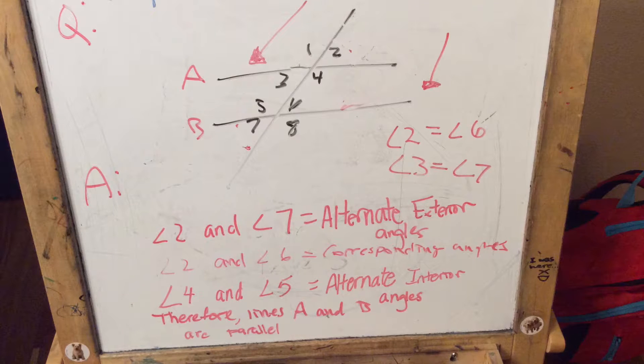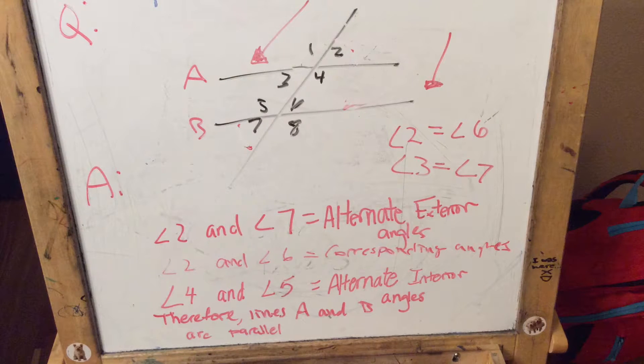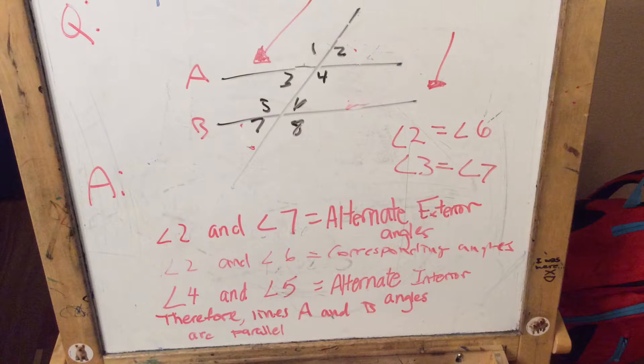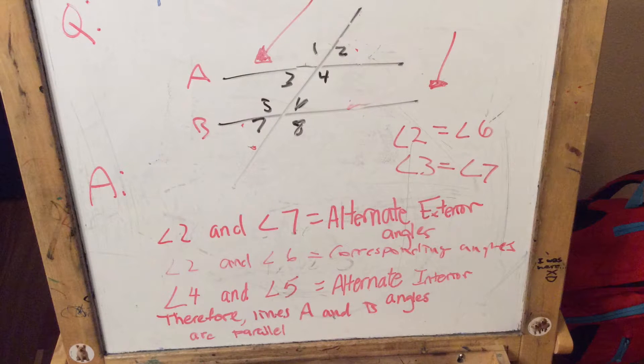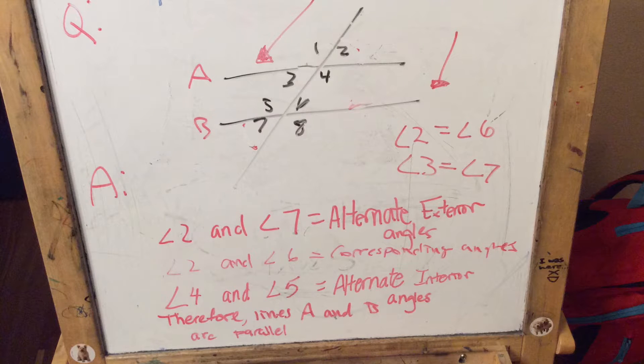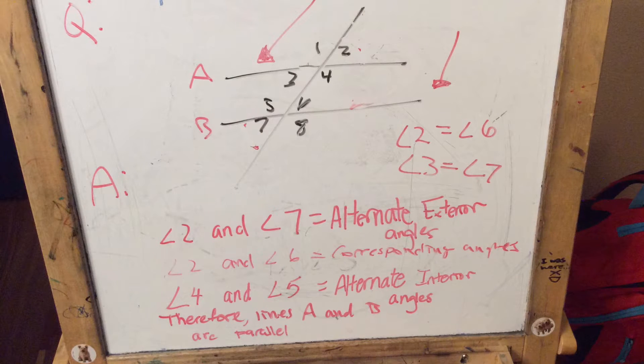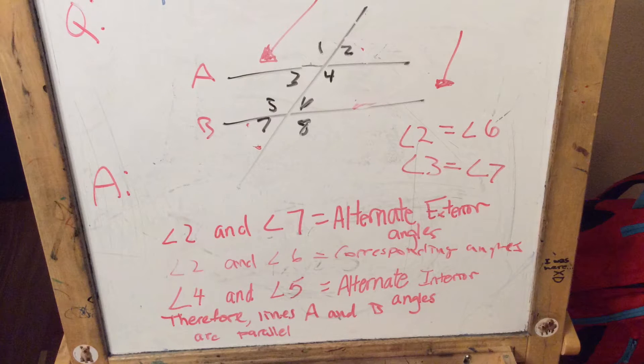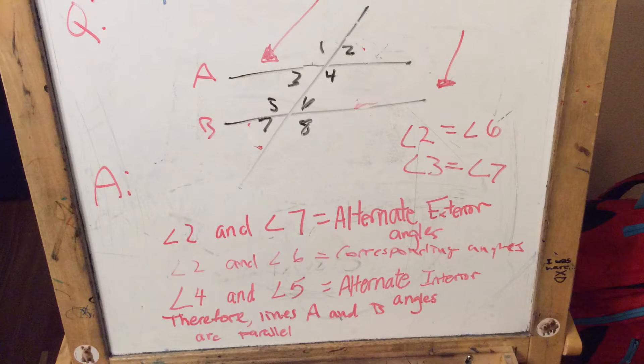If you translate line A down to line B through the intersecting line, then angle 2 and angle 6 must be equal and angle 3 and angle 7 must be equal. Since you're translating them down, they must be equal because they're in the same position they were, except in a different spot.